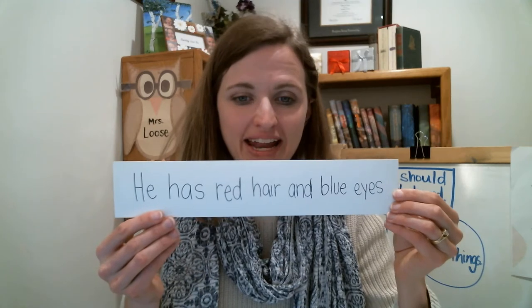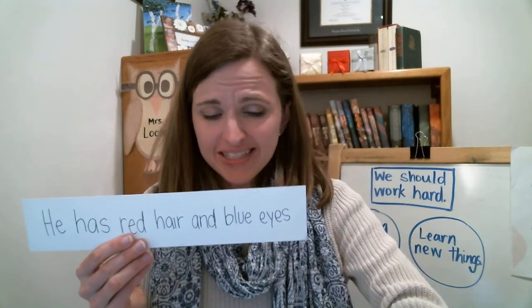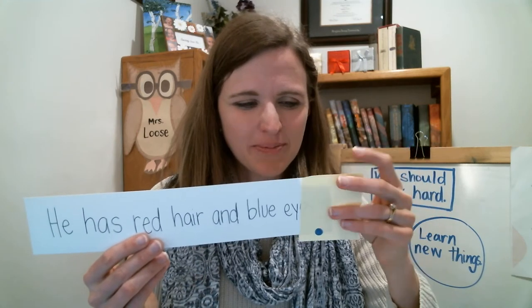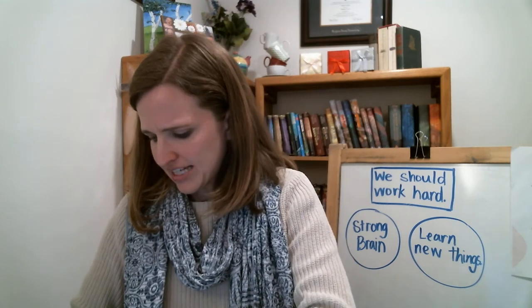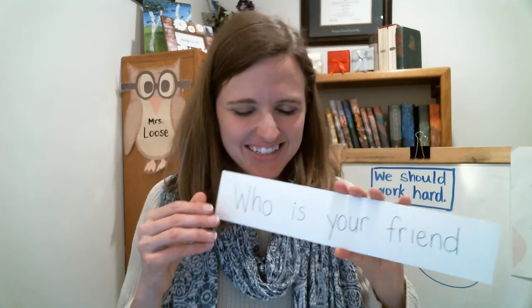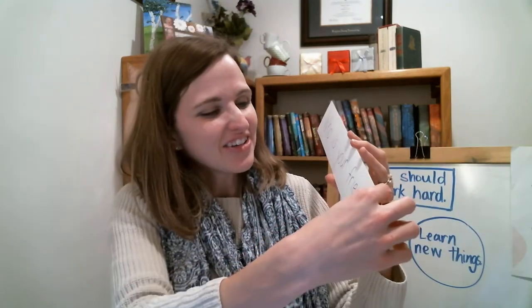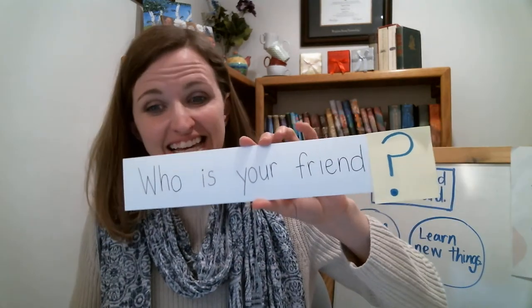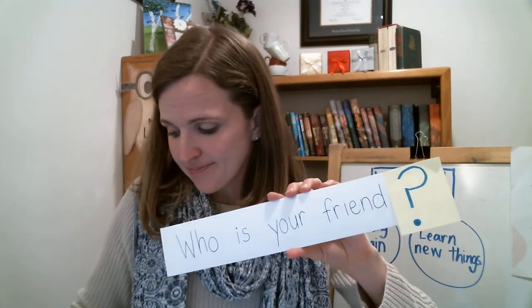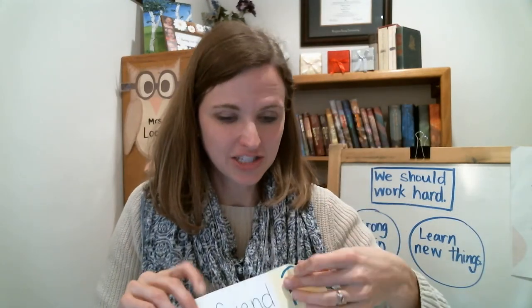He has red hair and blue eyes. Is that a question? No, it's not a question, so it must need a period. He has red hair and blue eyes — there's our period. Let's try my last one: Who is your friend? It's a question, so you need your question mark. At the end of a sentence, if it needs an answer, that must mean it's a question, so you will use a question mark. Sometimes we use periods, sometimes we use question marks. Watch for periods and question marks as you read this week.